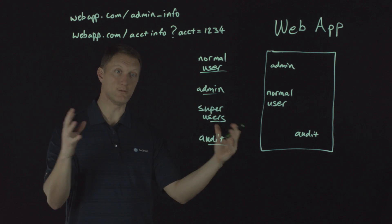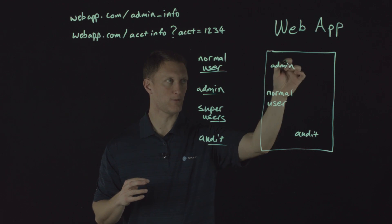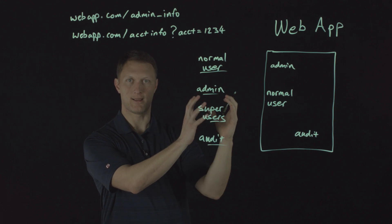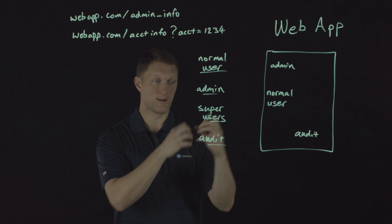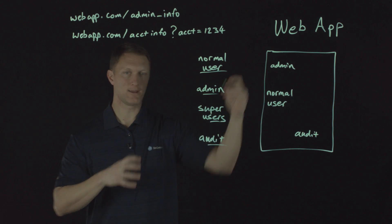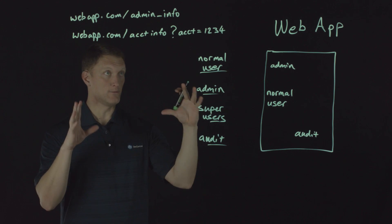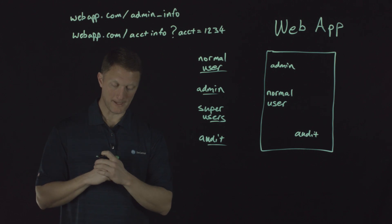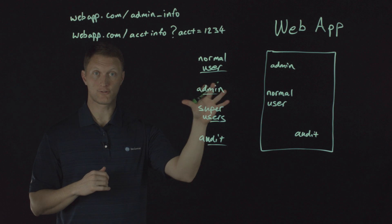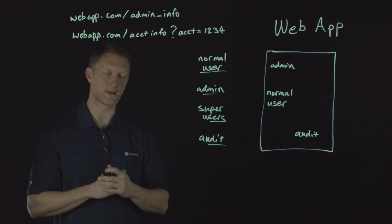Implement access controls one time and then reuse them. Rather than building separate access control features around each part of your web application, build them once, make sure they're secure and powerful, and reuse them across the application. Also, log your failures and alert your admins whenever they happen — send emails or notification warnings whenever failures are logged.